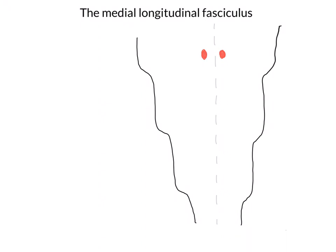In blue, I'm going to draw on the trochlear nuclei. You'll notice that both the oculomotor and trochlear nuclei are in the midbrain. And then more caudal to this, I'm going to draw on the abducens nuclei in green.